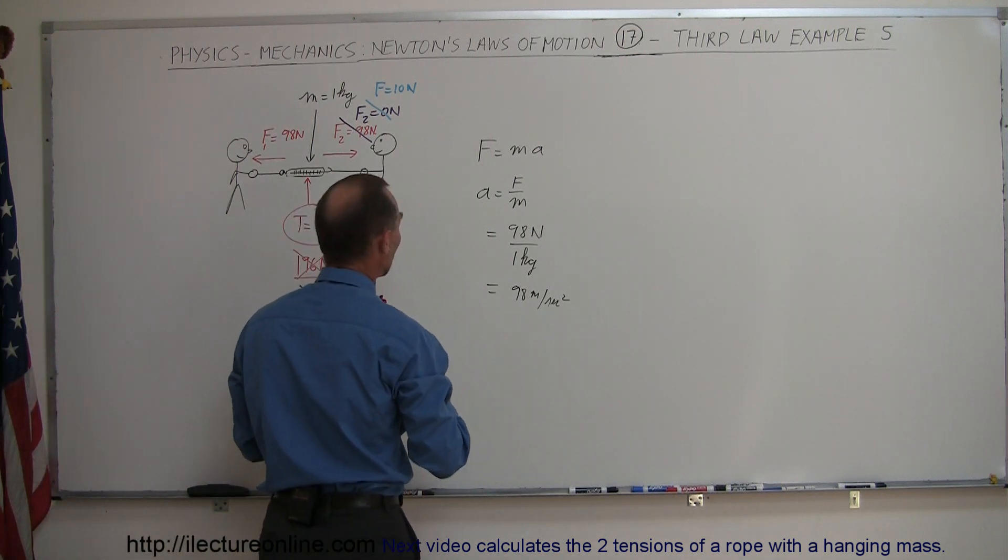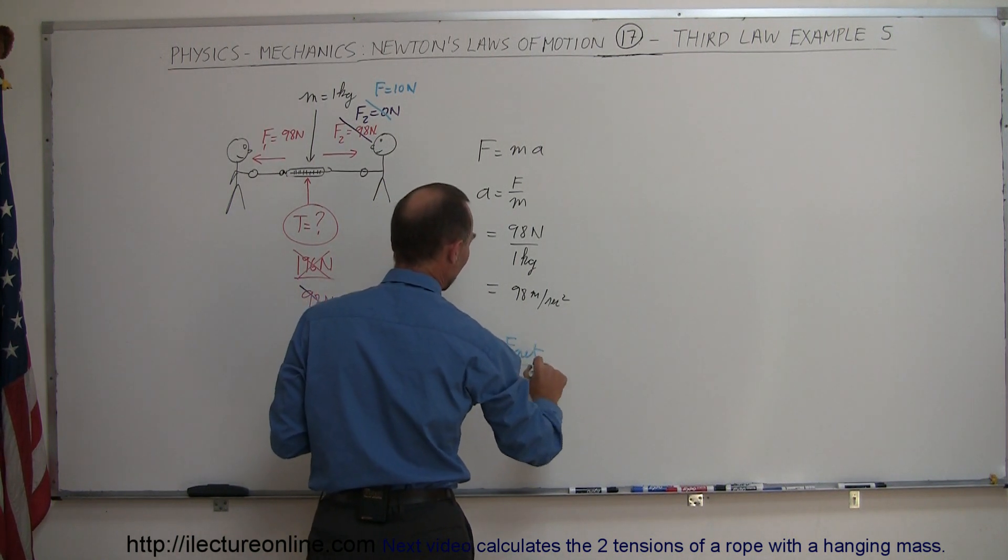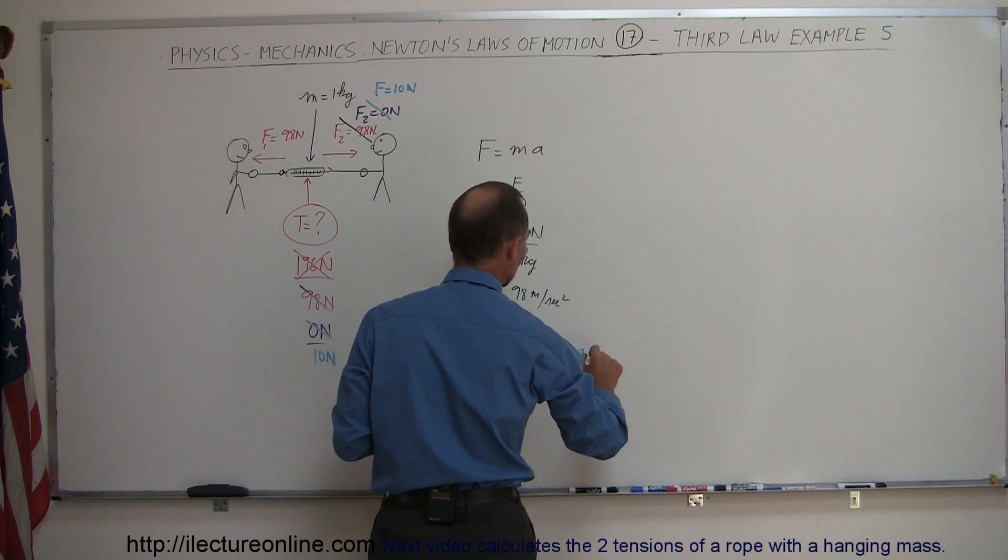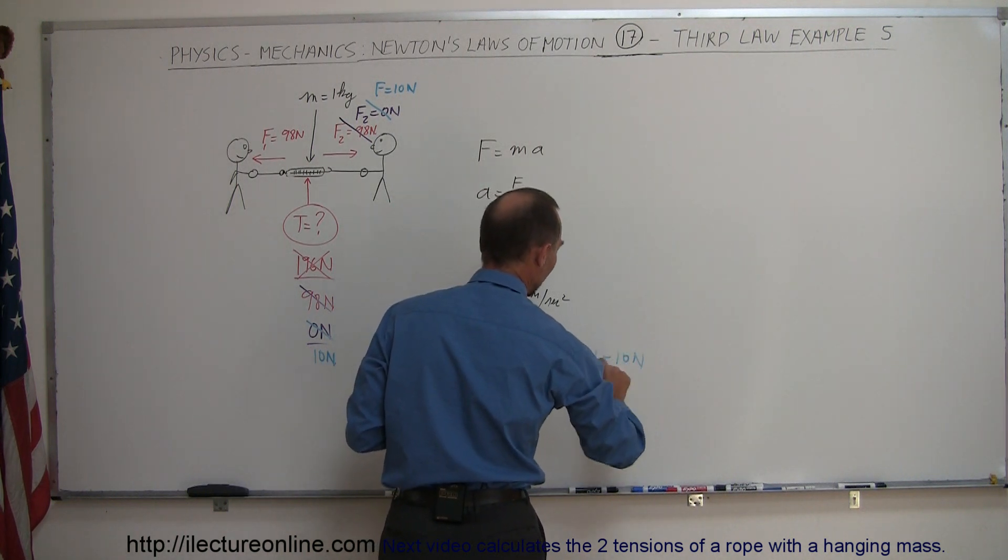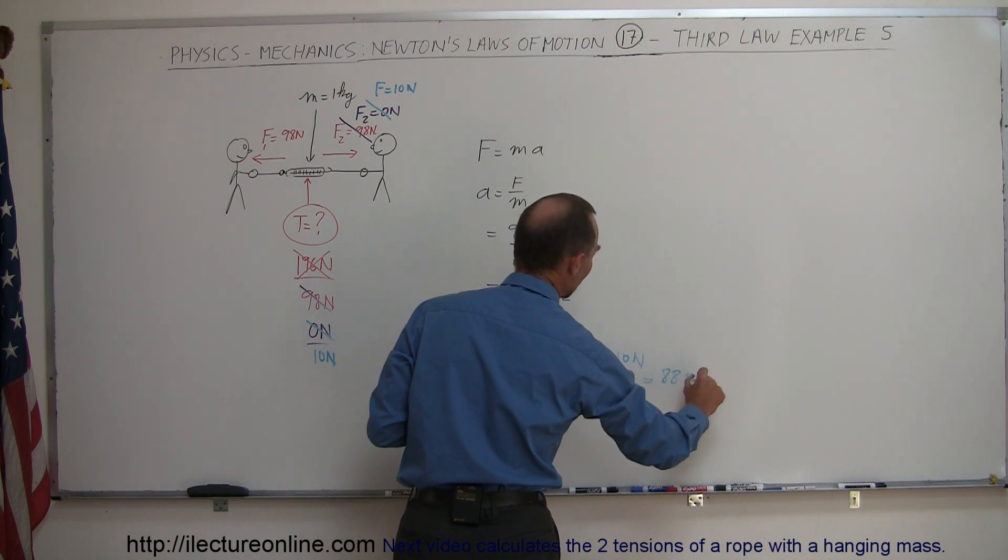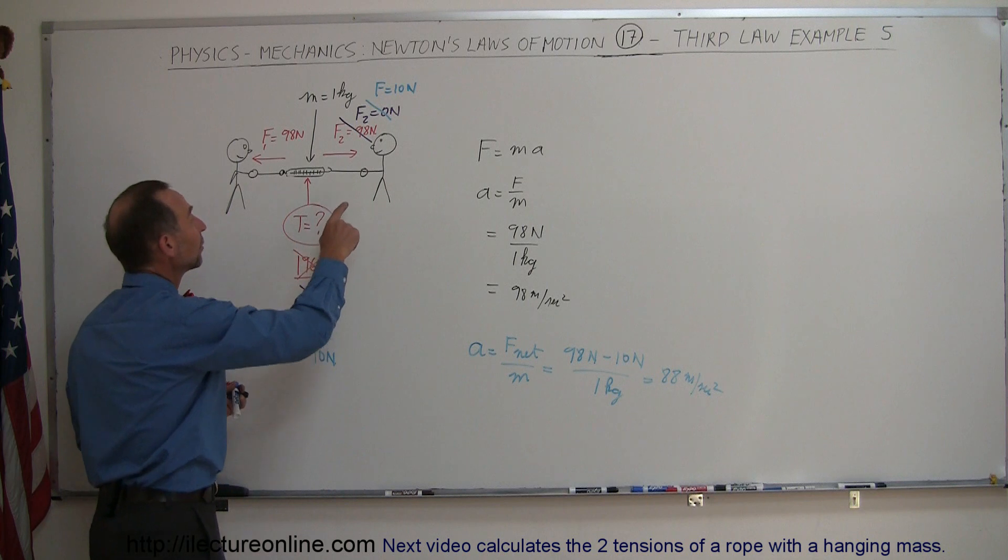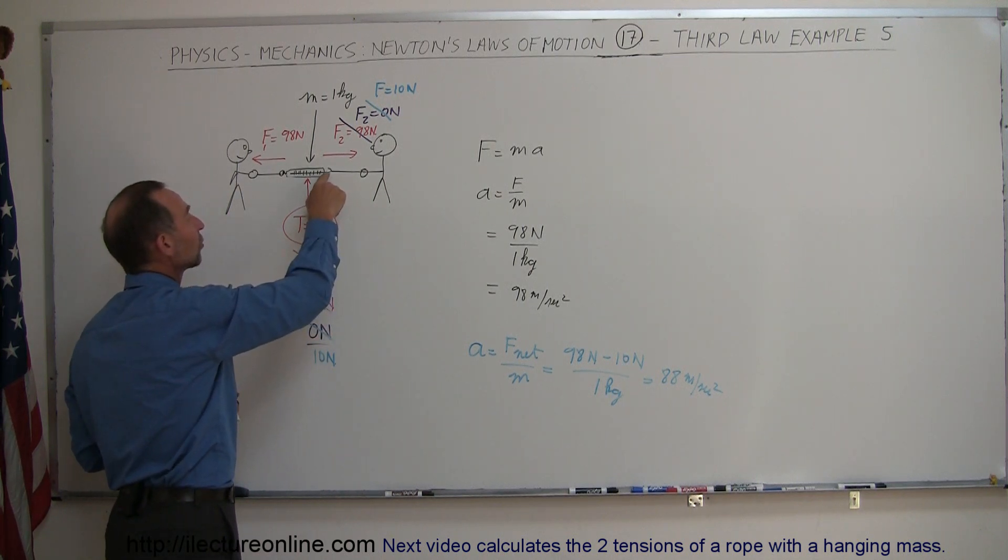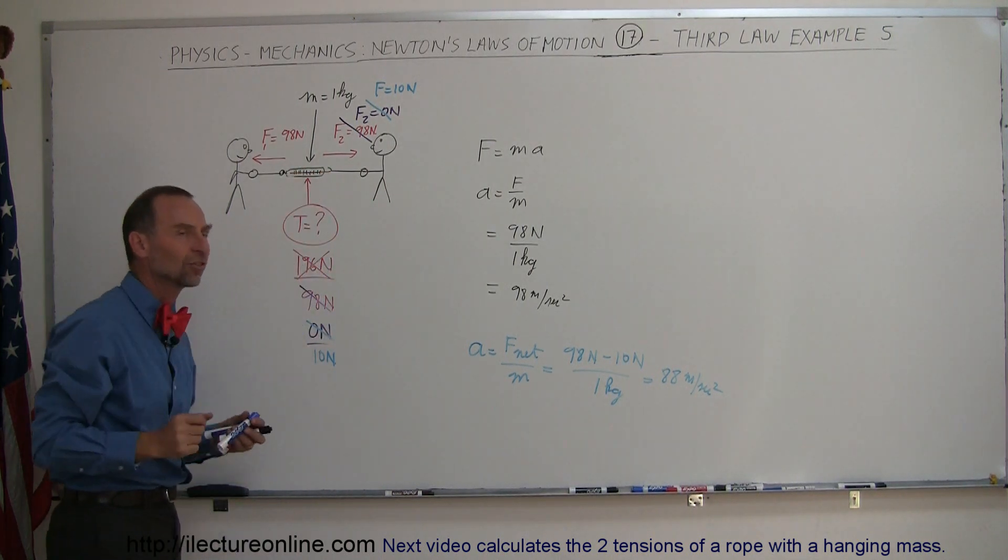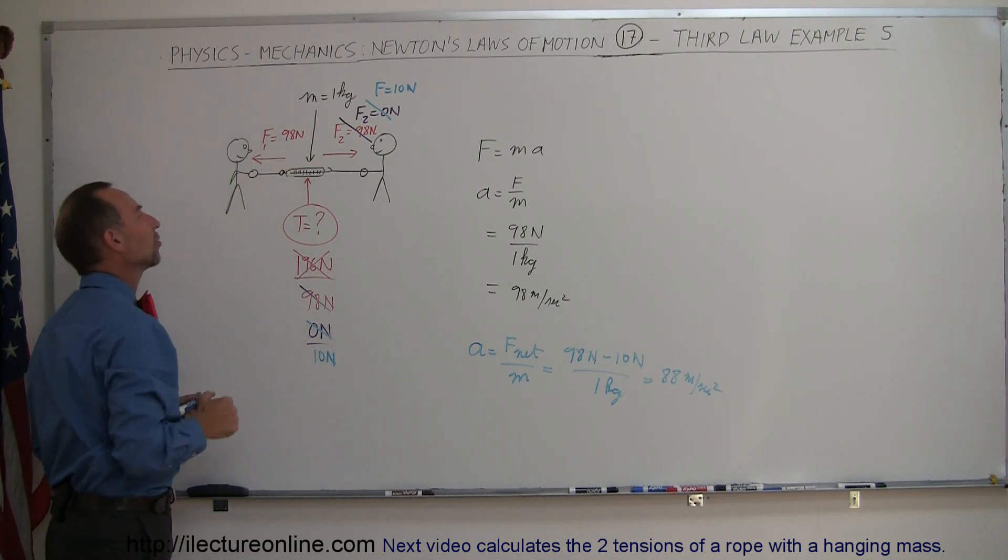So in that case, we would have acceleration equals F net divided by the mass. In this case the net force would be 98 Newtons minus 10 Newtons divided by 1 kilogram which would now be 88 meters per second squared. So you see that only the person on the right which has a spring attached to the actual spring scale hook, which is attached to the spring of the scale, would induce a tension reading on the scale.